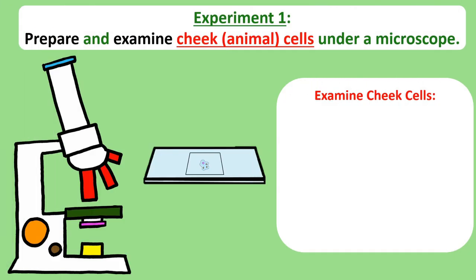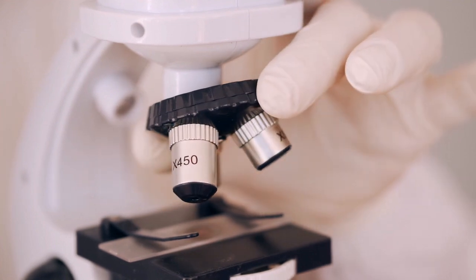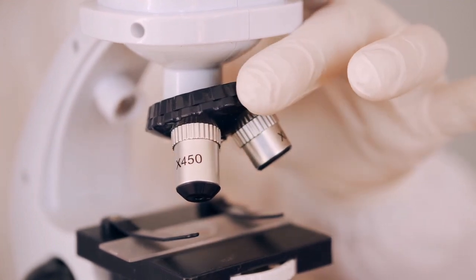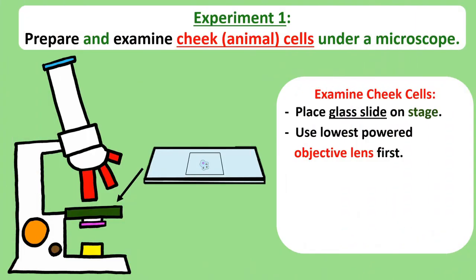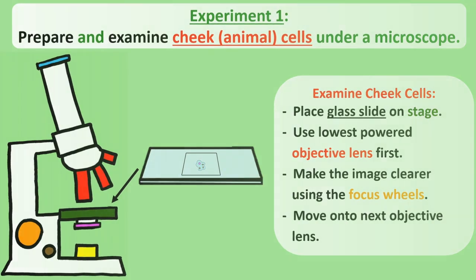And now for the fun part, examining the cells. Take the glass slide and gently place it onto the stage, securing it with those metal clips. Now remember previously we mentioned that there are three objective lenses, a low power, medium power and high powered one. Swivel to the lowest powered lens first and view the cells through the eyepiece lens. If the image is blurry, adjust the coarse focus wheel and then the fine focus wheel before moving on to the next highest powered lens.